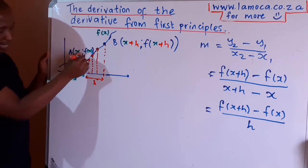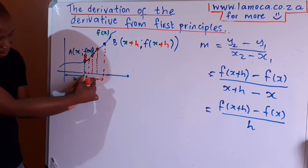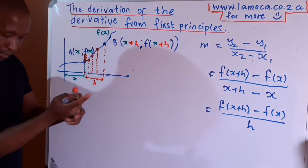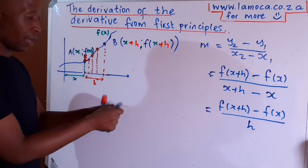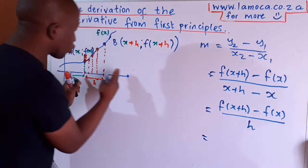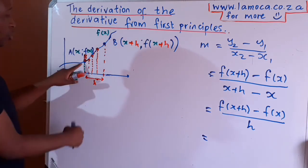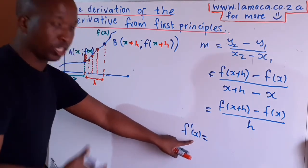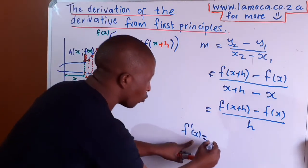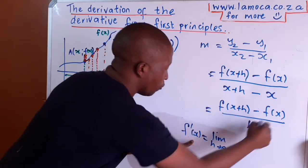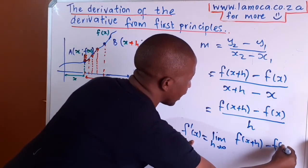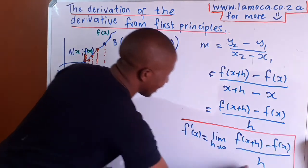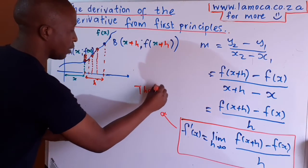We want A and B to be exactly on top of each other — at one point — which means we want h to get closer and closer until it becomes zero. But it can never actually be zero because that would give division by zero. So we say f prime of x — the derivative, the gradient at one point — is the limit as h approaches zero of f(x+h) minus f(x) all divided by h. This is the formula used to find the gradient at one point, and it is known as the derivative.